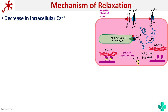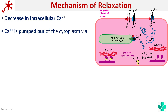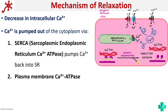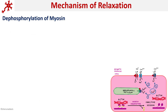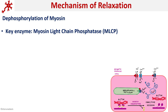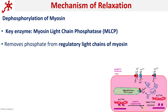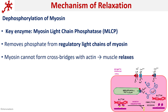How does the decrease in calcium occur? The calcium is pumped out of the cytoplasm via three pumps. First is the SERCA pump — sarcoplasmic endoplasmic reticulum calcium ATPase — which pumps calcium back into the sarcoplasmic reticulum. Second is the plasma membrane calcium ATPase, which pumps calcium out of the cell. Third is an active sodium-calcium exchanger, also pumping calcium out of the cell. All three cause a decrease in cytosolic calcium, decreased calmodulin activation, decreased MLCK activity, and thereby relaxation. Myosin light chain phosphatase removes phosphate from myosin so it cannot form cross-bridges with actin.